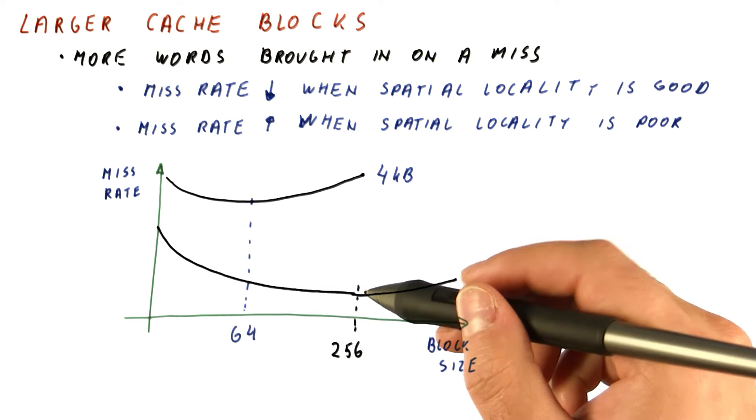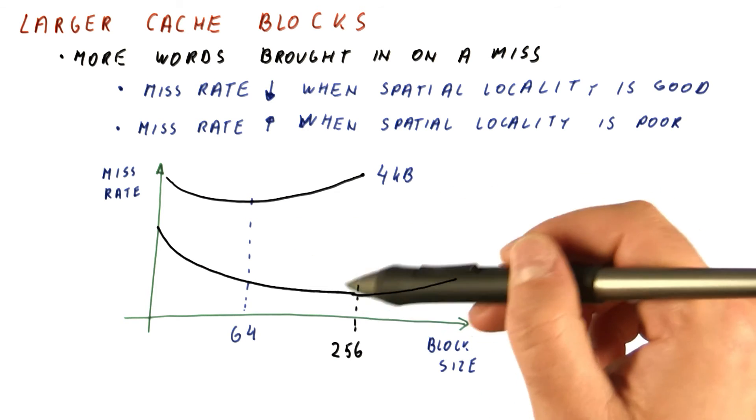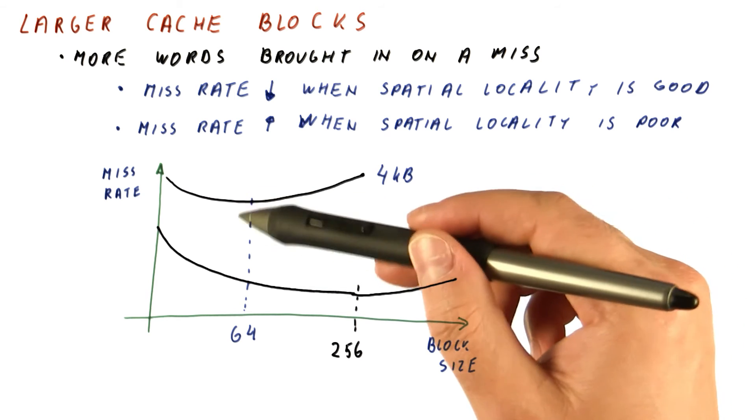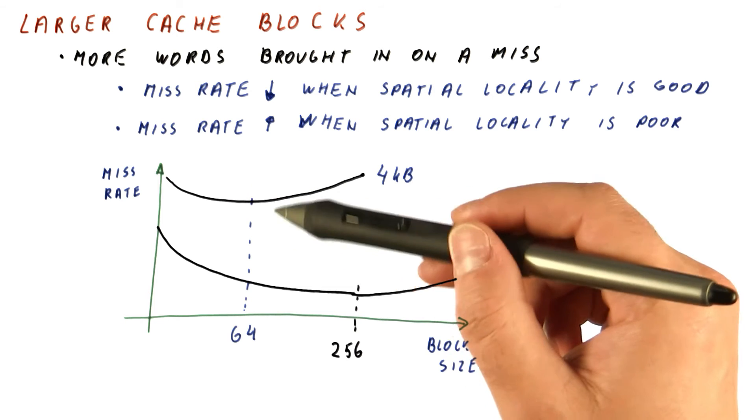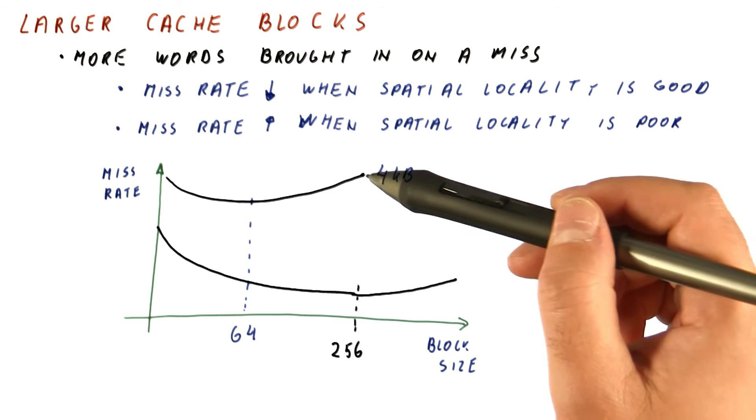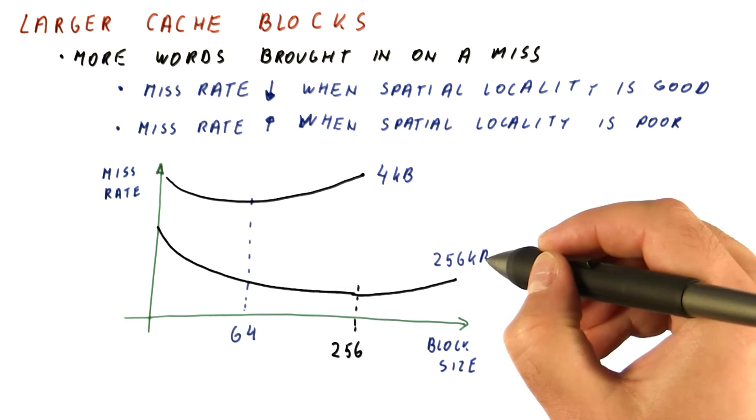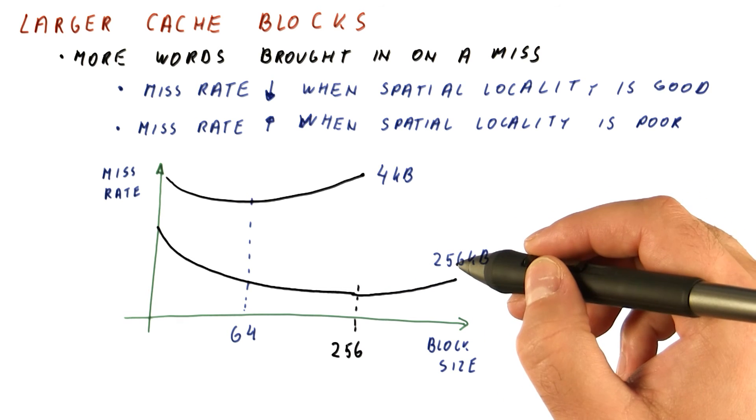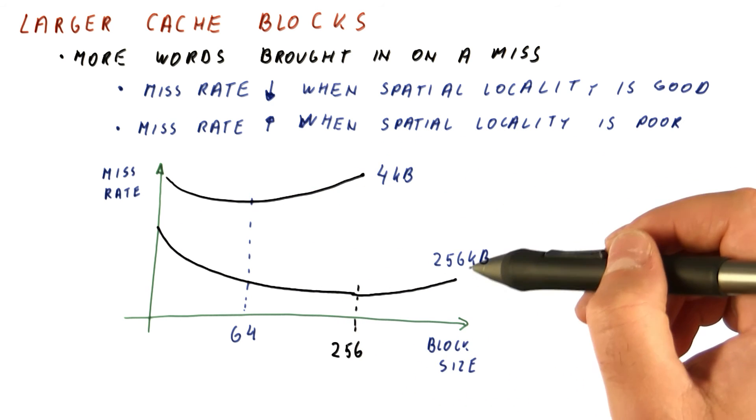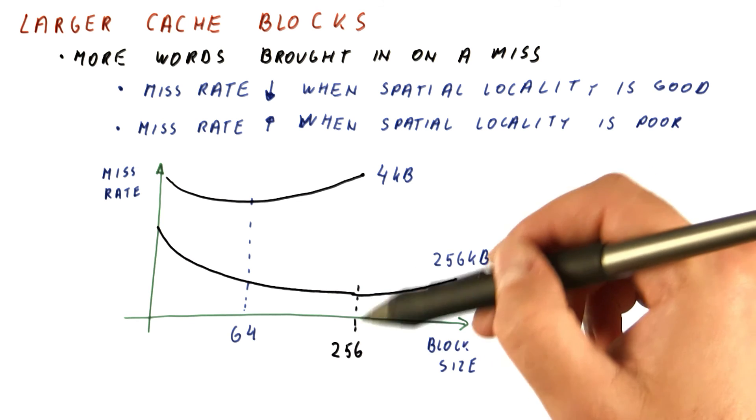This effect has to do with how much junk we're putting in the cache and how much room there is. Some blocks will have more locality than others. In a small cache, those that don't have enough spatial locality create junk, and those that do have a lot of spatial locality are being placed in the cache, but there's not enough room for them because of all the junk. When we have a larger cache, for example 256 kilobytes, those blocks that don't have enough locality put some junk in the cache, but the cache is bigger, so it can also contain those blocks that do have spatial locality. So the cache tolerates a slightly bigger block size.